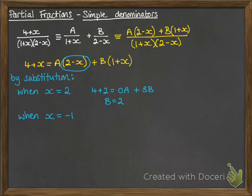And then we use the other bracket to substitute a value of x that would make that one 0. So if we put x equals minus 1 that second bracket becomes 0. So on the left we get 4 minus 1 and on the right 3A plus 0B, and from there we can work out what A is.